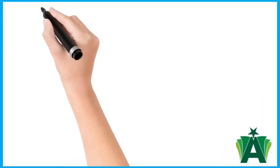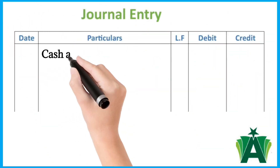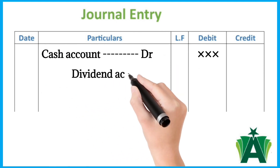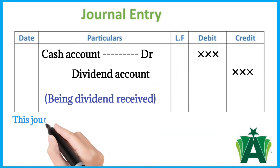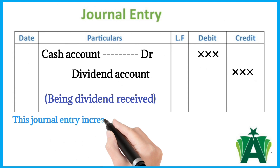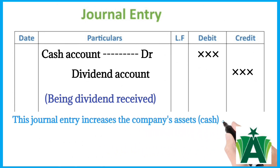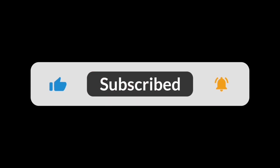The journal entry to record dividends received is: cash account debit, dividend account credit, being dividend received. This journal entry increases the company's assets — cash — and income — dividend. If you like the video, please subscribe to our channel and press the bell icon for regular updates.